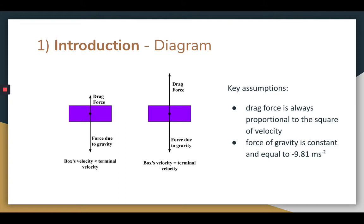Some key assumptions I've made in this lab are that the drag force is always proportional to the square velocity and that the force due to gravity is always constant and equal to negative 9.81 meters per second squared.